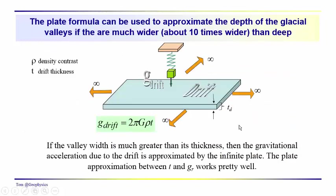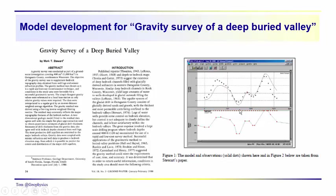What we do in the modeling exercise is we try to get the calculations to match the observations. We have a speculative model here, and our aim is to get the calculated gravity to match these observations. At this point the calculations don't agree very well — they're a little bit low in some places and a little bit high in others.